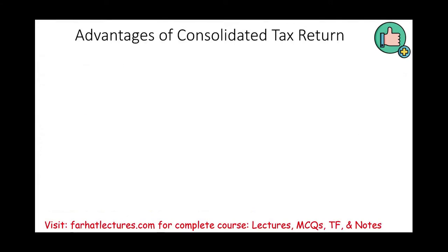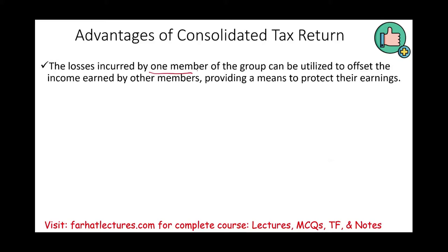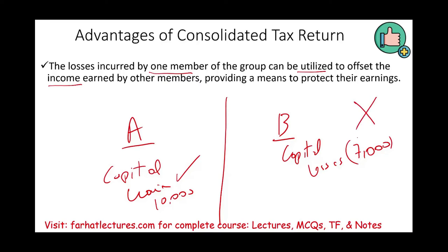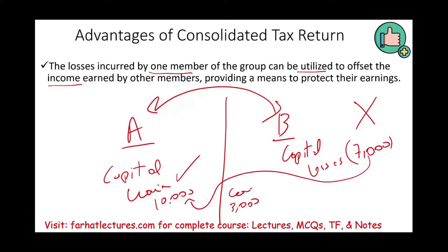Starting with advantages of consolidated tax returns — why would companies file a consolidated return? One benefit is that losses incurred by one member of the group can be utilized to offset income earned by another member, protecting earnings from taxation. For example, if Company A has capital gains of $10,000 and Company B has capital losses of $7,000 — if they file separately, Company A reports the full $10,000 gain and Company B cannot use the excess losses. If they combine, the net result is only $3,000 of gain.